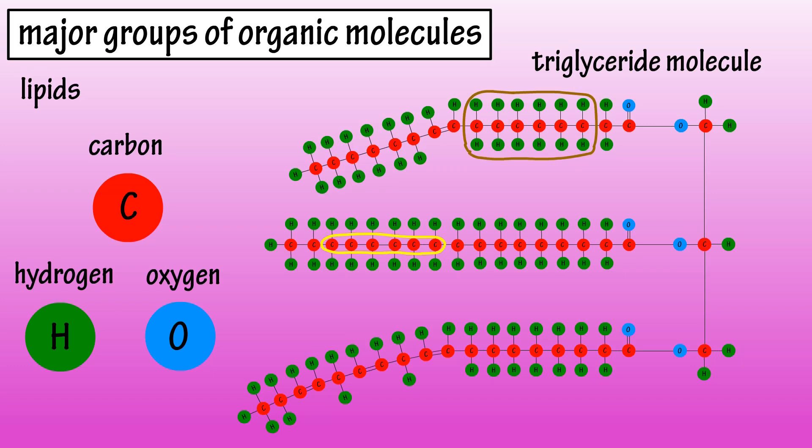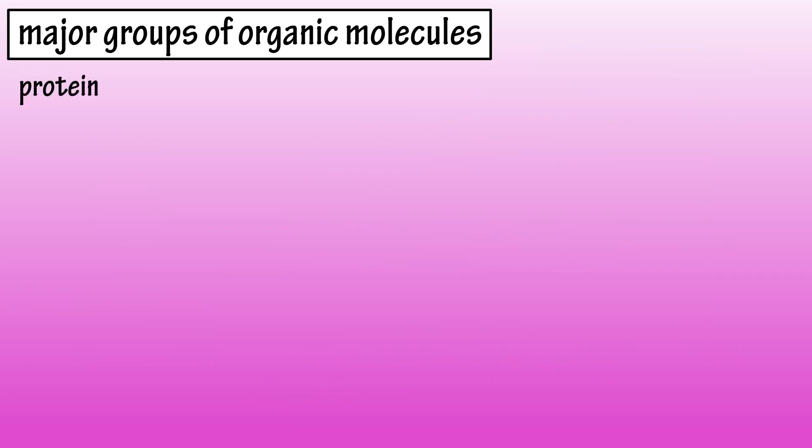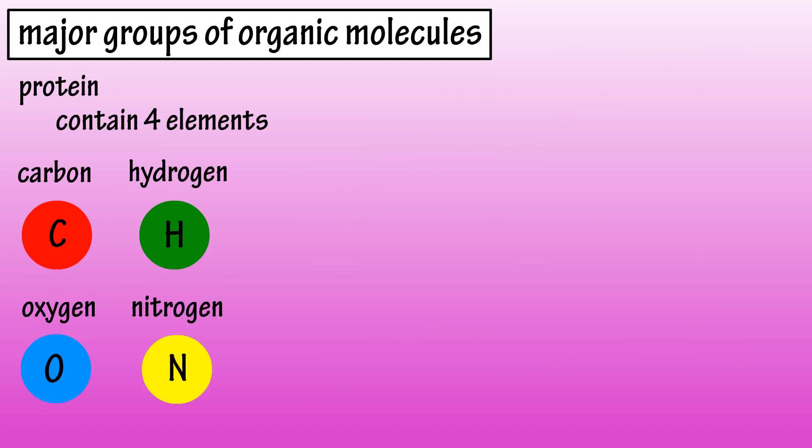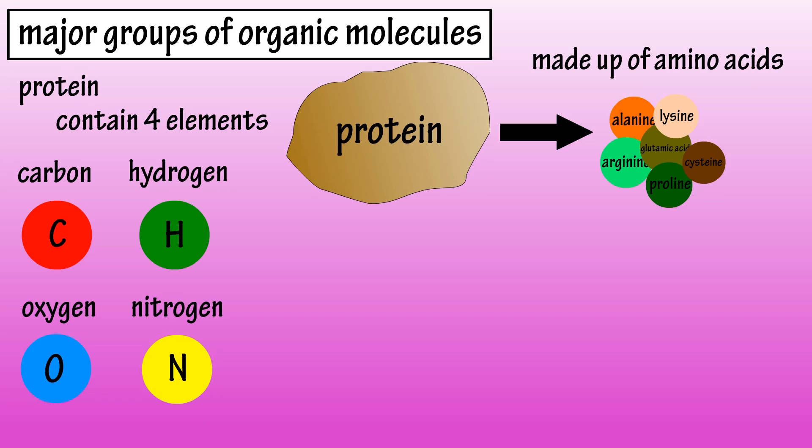There are several types of lipids, which we will cover in depth in another video. All proteins contain four elements: carbon, hydrogen, oxygen, and nitrogen. Proteins are giant macromolecules that are made up of amino acid building blocks.